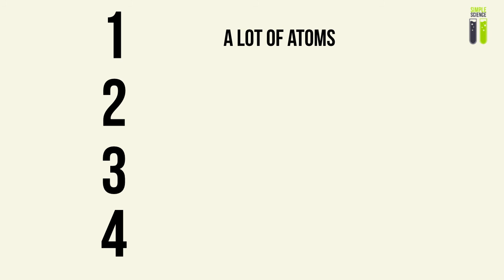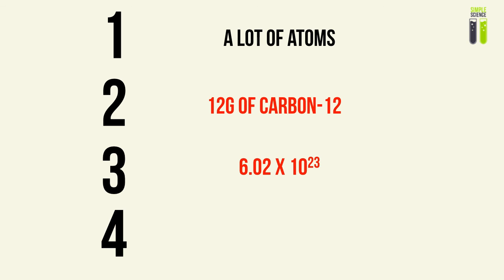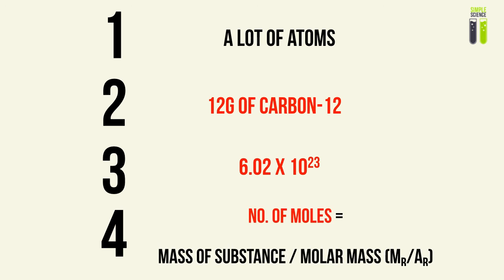The key takeaways from this video: elements in the universe exist as a very large number of atoms, so just as in physics we quantize charge, we use smaller numbers to understand what's going on. The idea of a mole is based on the carbon-12 standard — one mole equals the total number of atoms in 12 grams of carbon-12. The Avogadro constant is 6.02 times 10 to the 23. And the key calculation is: mass of the substance divided by molar mass gives the total number of moles. Thank you for watching, please check my previous videos, and good luck with your studies!